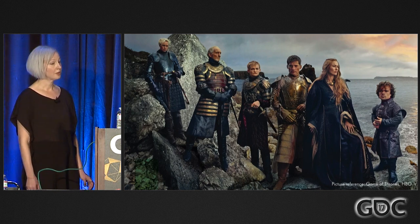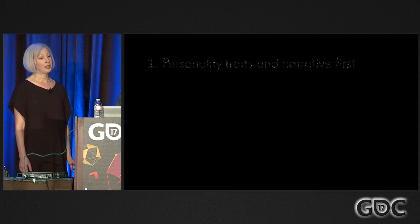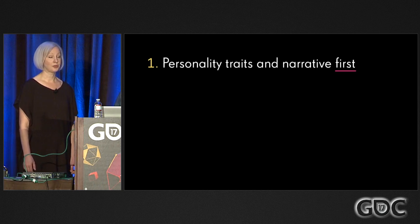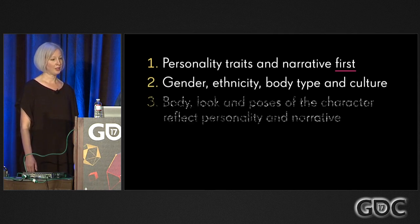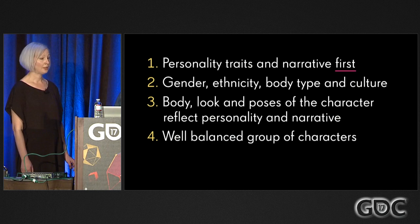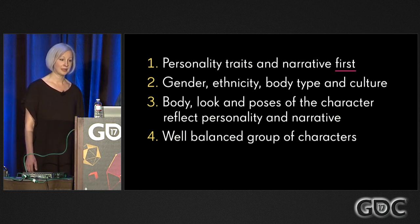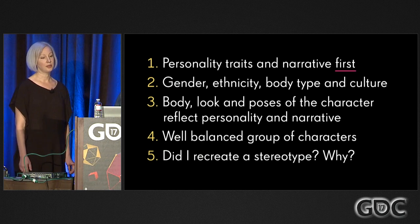Game of Thrones has an interesting and often very surprising mix of characters. There are some principles to guide you. Decide the character's personality traits and narrative first — which story do you want to tell, and with which characters? After this, you can decide the gender, ethnicity, body type, and culture. Always aim to let the body, look, and poses of the character reflect the personality and narrative. Aim for a well-balanced group of characters. And always ask yourself: did I recreate the stereotype? If so, why? Remember, with an original character it's easier to create a strong and recognizable brand.